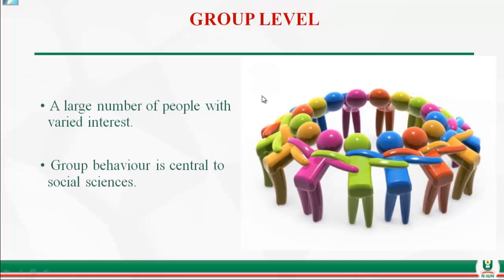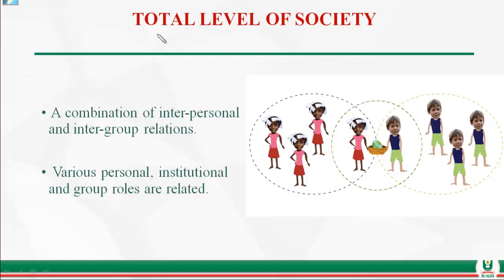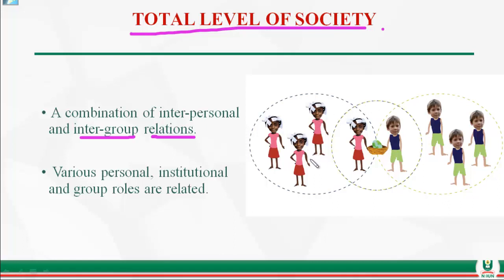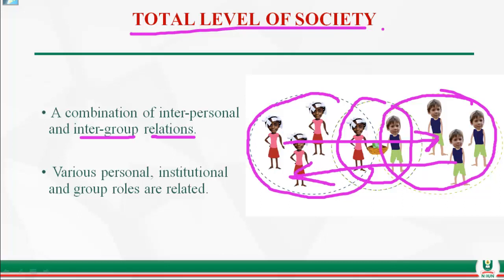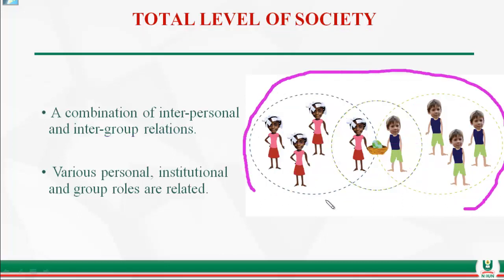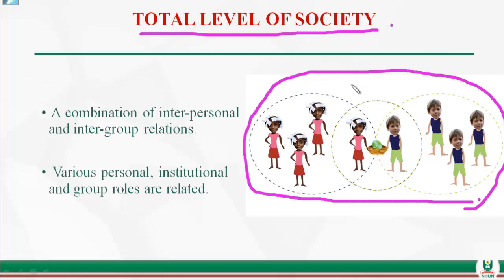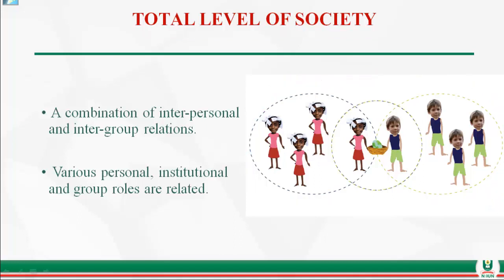The total level of social organization is a combination of interpersonal and intergroup interaction — that is, interaction between groups. All groups interact together, constituting society as a whole. This is the highest level of social organization, and it transcends from the interpersonal to the group and then to the total level.